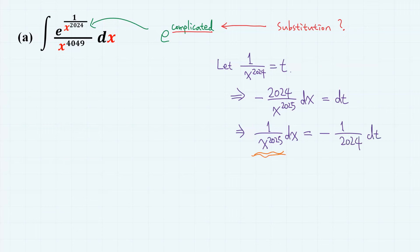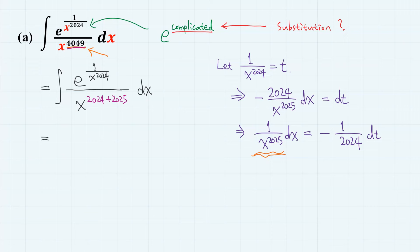But we don't have any 1 over x^2025 in the given integrand. However, we can obtain another hint from the number 4049. Notice that 4049 can be split into 2024 plus 2025. So this equals the integral of 1 over x^2024 times 1 over x^2025 times e to the power of 1 over x^2024 dx.